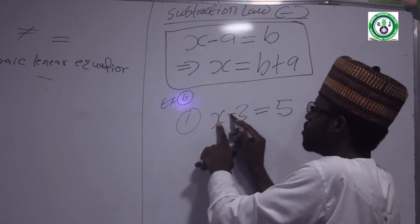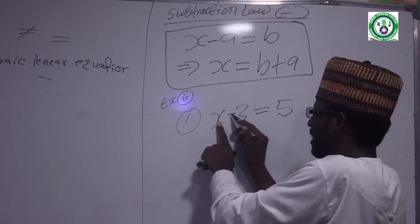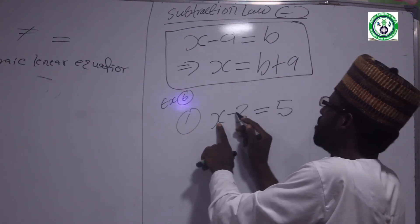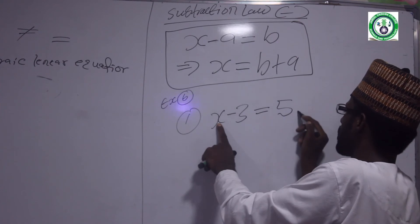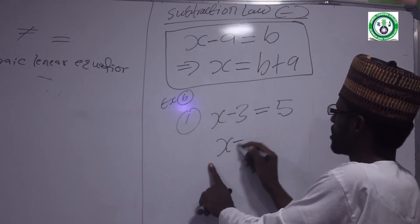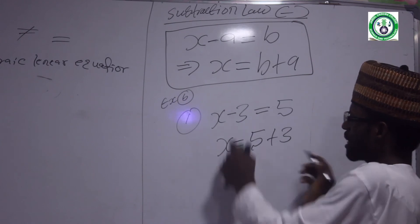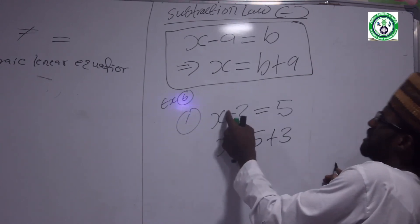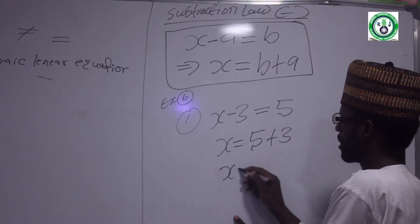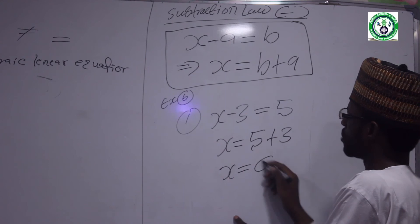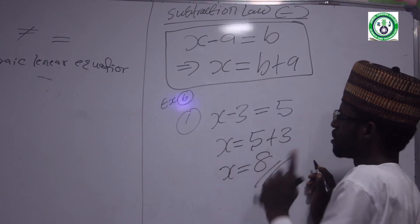X is what we are looking for. Subtract 3, move it to the right side: it becomes plus 3. So x is equal to 5 plus 3. That means x is now equal to 8.